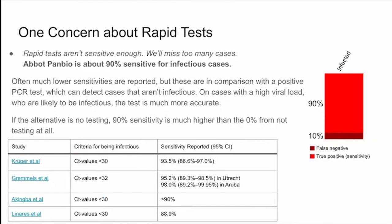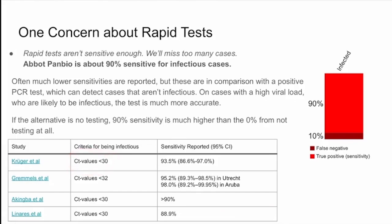So the concerns about rapid tests. A typical example is the Abbott Panbio variety — there's a wide range of studies, but generally they're about 90% sensitive for infectious cases. So if your viral load is high enough that you're infectious, then 90% of the time these antigen tests will pick up that fact. There's a very careful definition of what we mean by infectious here, and it actually has to do with the cycle times in a PCR test.